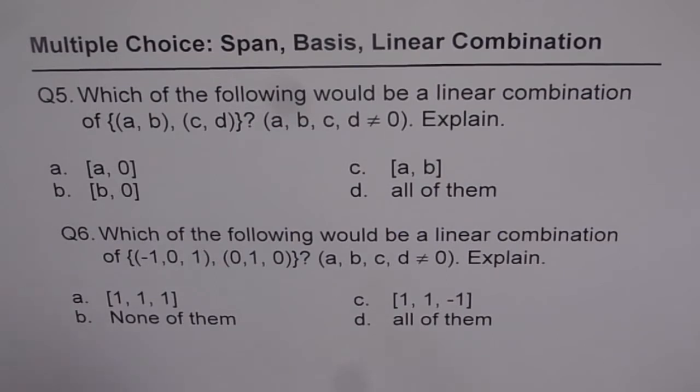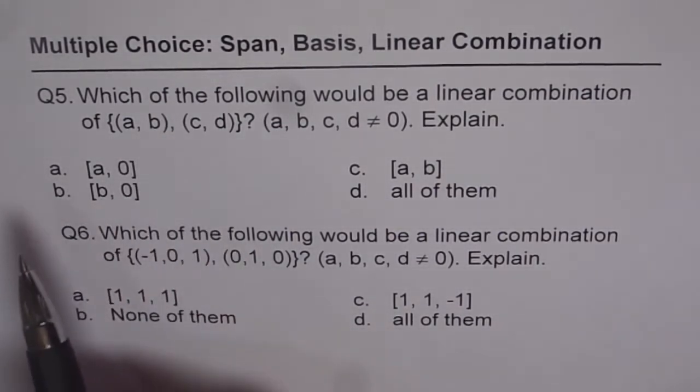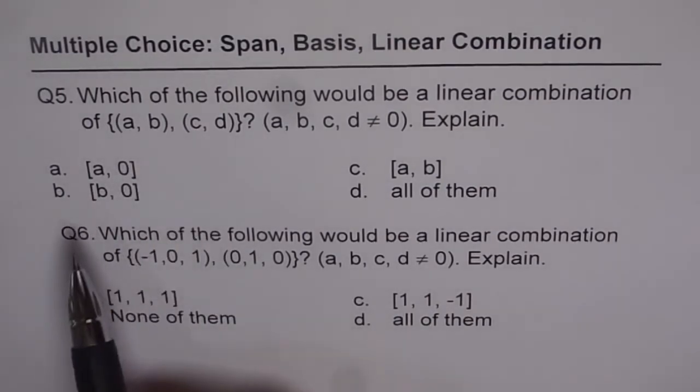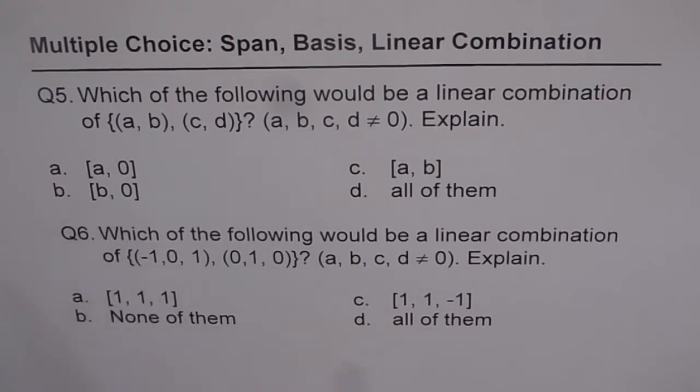We have four choices, and these are the two vectors which are going to span something. What can it span? That is what we're trying to figure out. The choices are: A0, B0, AB, or all of them. Select the right answer and provide an explanation.